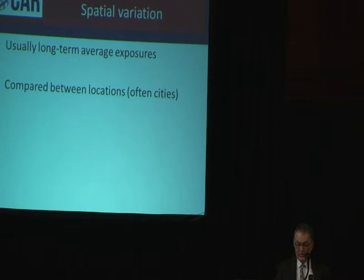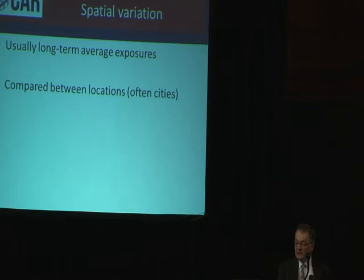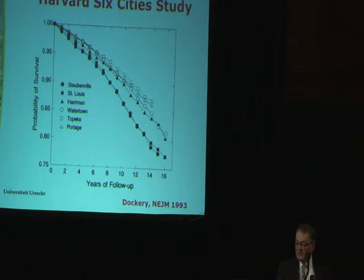There are two sources of variation that we usually observe. One is spatial variation — variation across areas, between areas — in which we often use long-term exposures, comparing the long-term yearly average concentration between different locations, often different cities or towns.